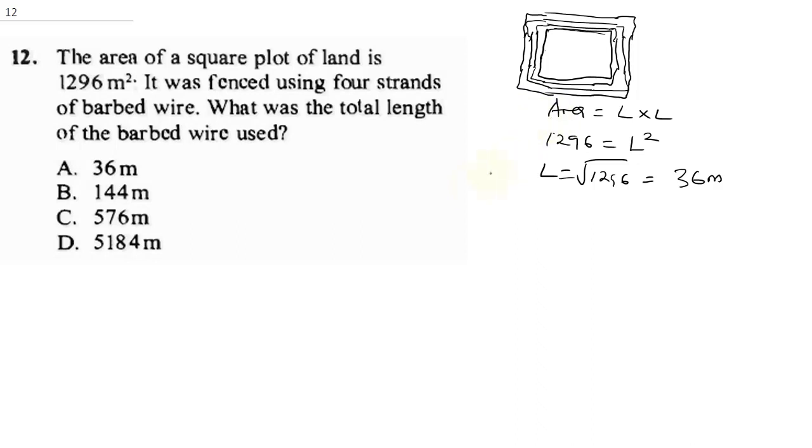So that means, for us to get the perimeter, perimeter of one wire, will be 36 plus 36 plus 36 plus 36. So this would be 36 times 4, and that's going to give us 144 meters.